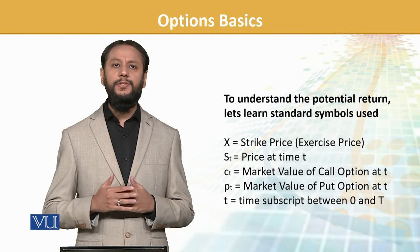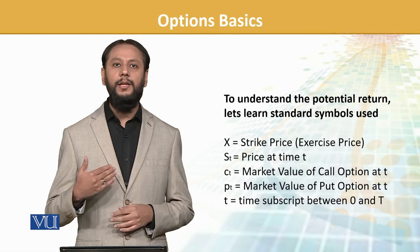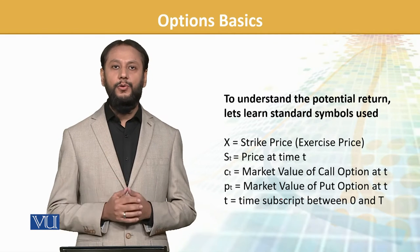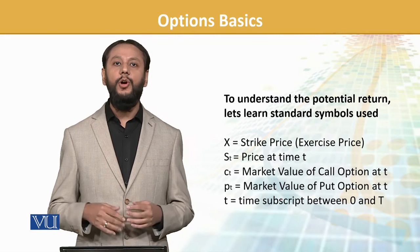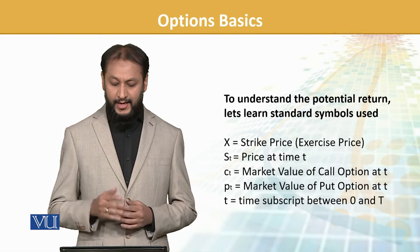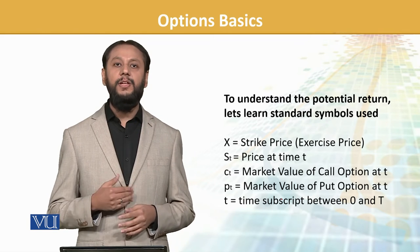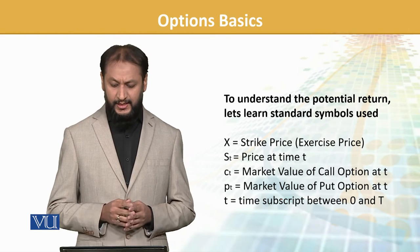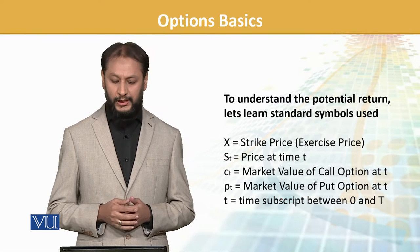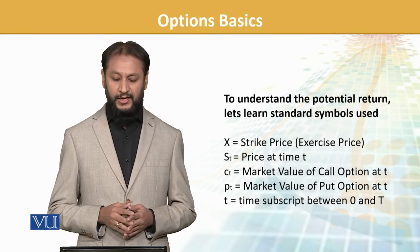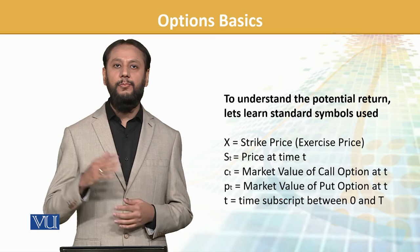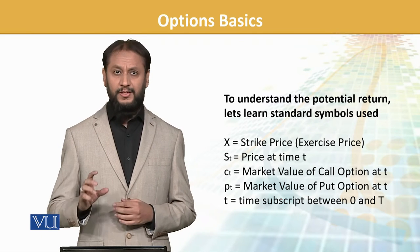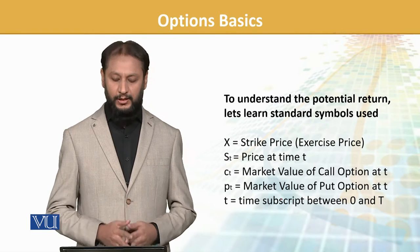To understand, we need to see some terminology because these will be used again and again in all the strategies. X normally denotes strike price, or exercise price, at which the option will be exercised. S is normally the spot price at a given time — S_t means price at time t. C is the market value of a call option, and P will be referred to for a put option. T is time in a future period. These notations will be repeatedly used in our formulas.